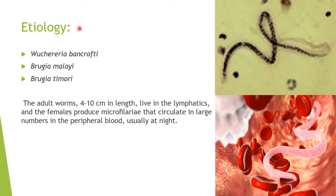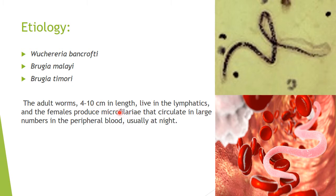The cause of filariasis involves three filarial species: Wuchereria bancrofti, Brugia malayi, and Brugia timori. These are parasites. The adult worms, 4 to 10 cm in length, live in the lymphatics, and the females produce microfilariae that circulate in large numbers in the peripheral blood, usually at night.